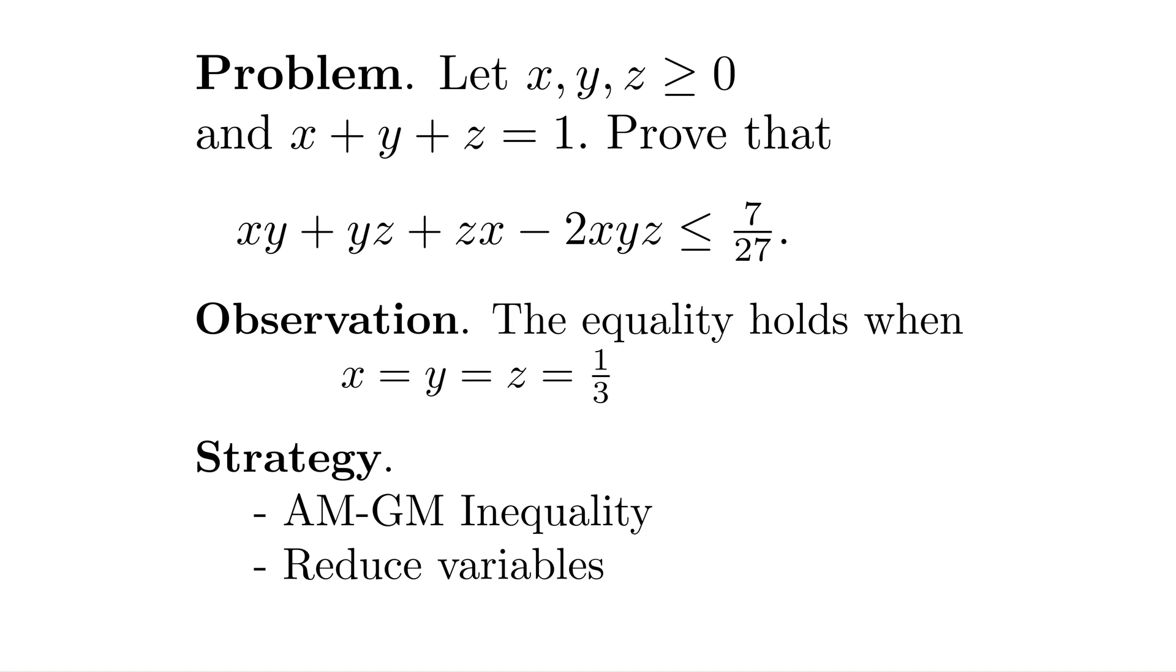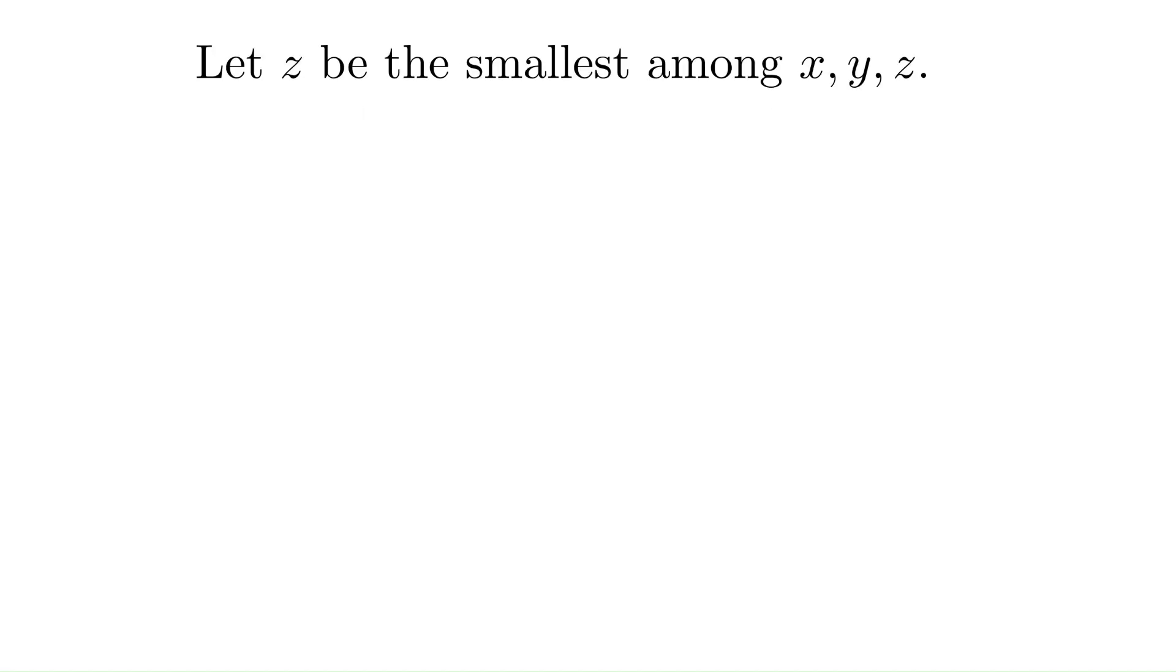Another trick is the elimination of variables using the given condition. The left hand side of the inequality is cyclic in x, y, and z. So without loss of generality, we can assume z is the smallest number among x, y, and z. In this case, z is less than or equal to one third.